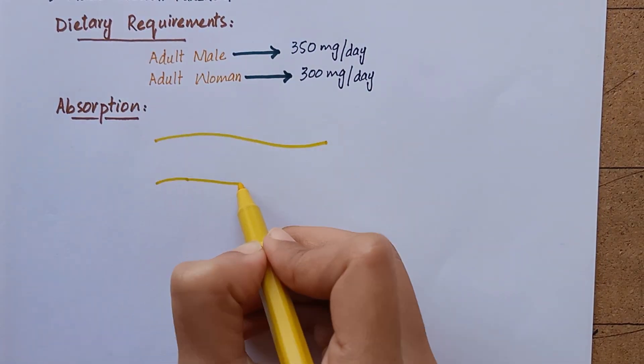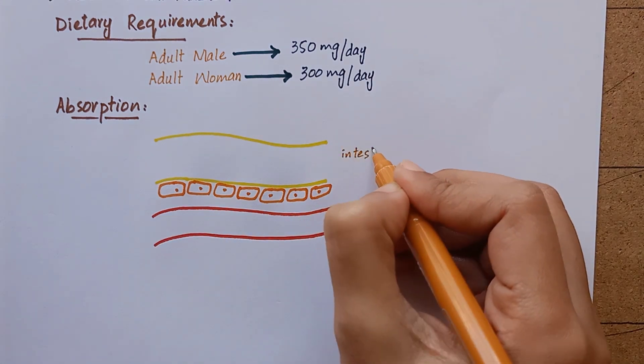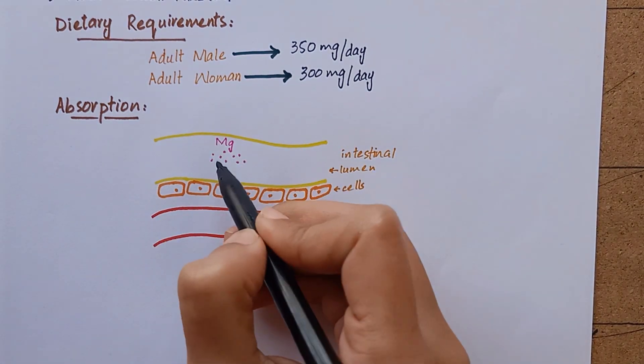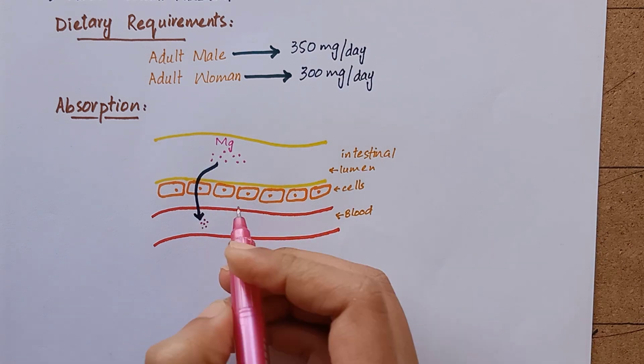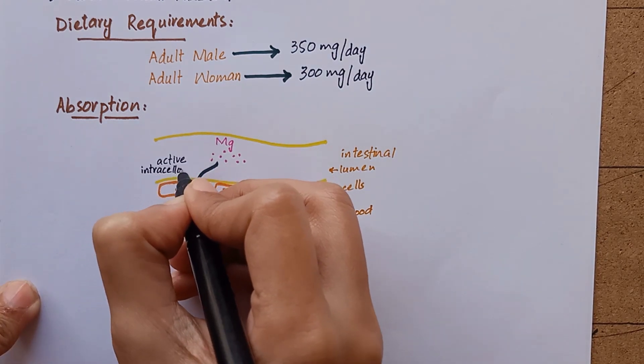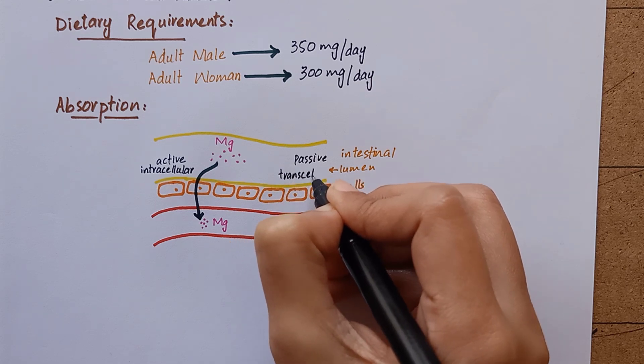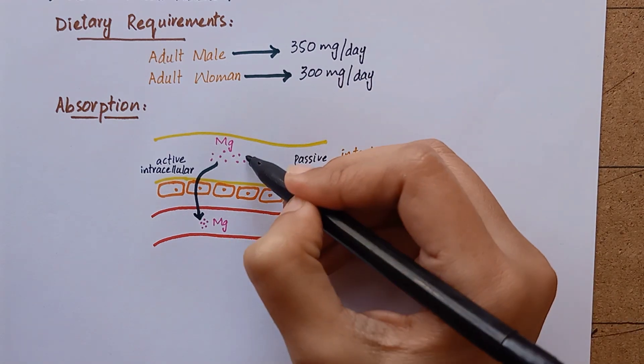Now coming to the intestinal absorption, magnesium is absorbed by intestinal cells through an active intracellular pathway which can become saturated at times, so there is another carrier system which uses a passive transcellular pathway. This is a non-saturable pathway.